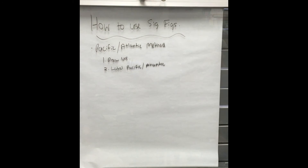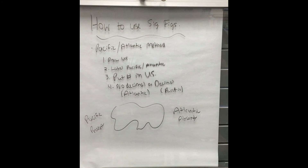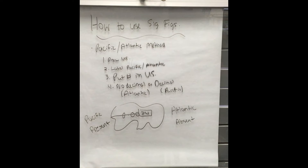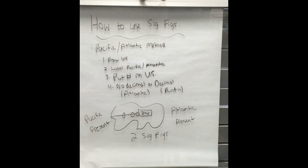Next we will go over how to use significant figures. First, start by drawing a picture of the United States, then write the number you wish to analyze within it. If a decimal is present, start from the Pacific Ocean, because Pacific and present both start with P. Start at the first non-zero digit and count the rest of the digits within the number — that is how many significant digits there are. In this case we have two significant digits because we start counting at the two and end at the four.